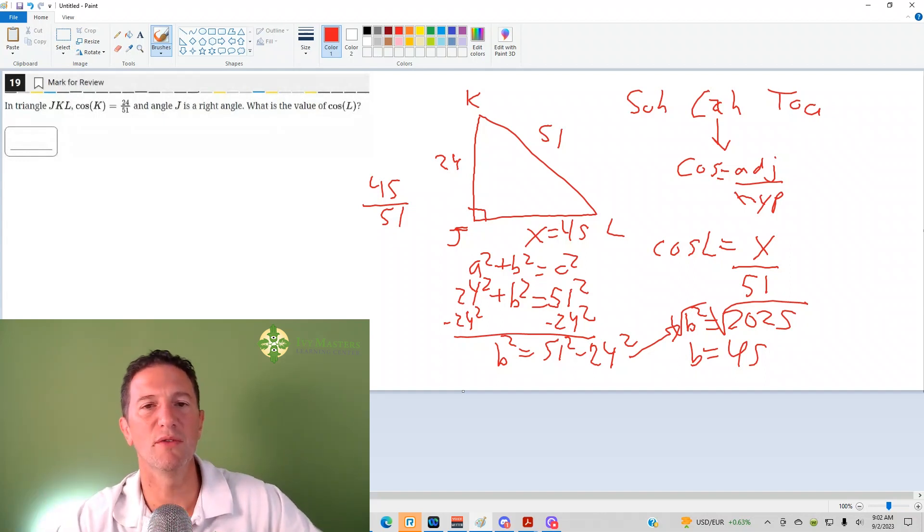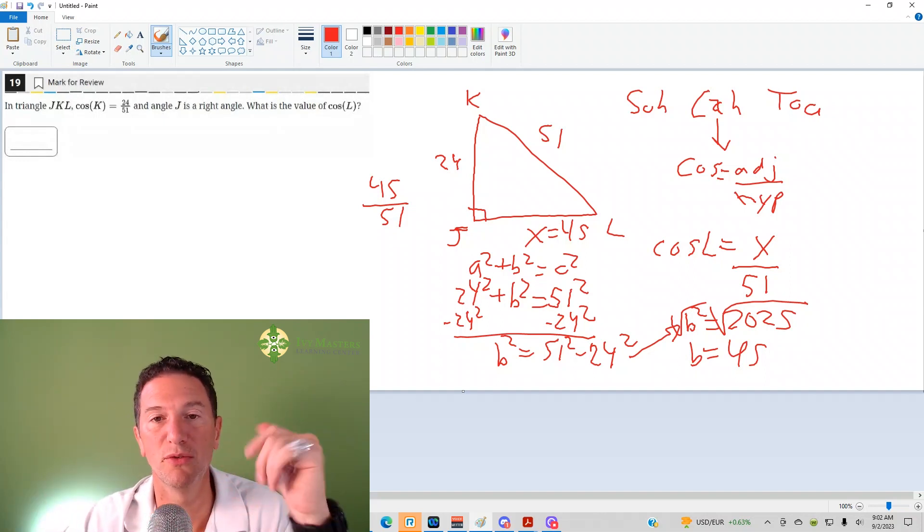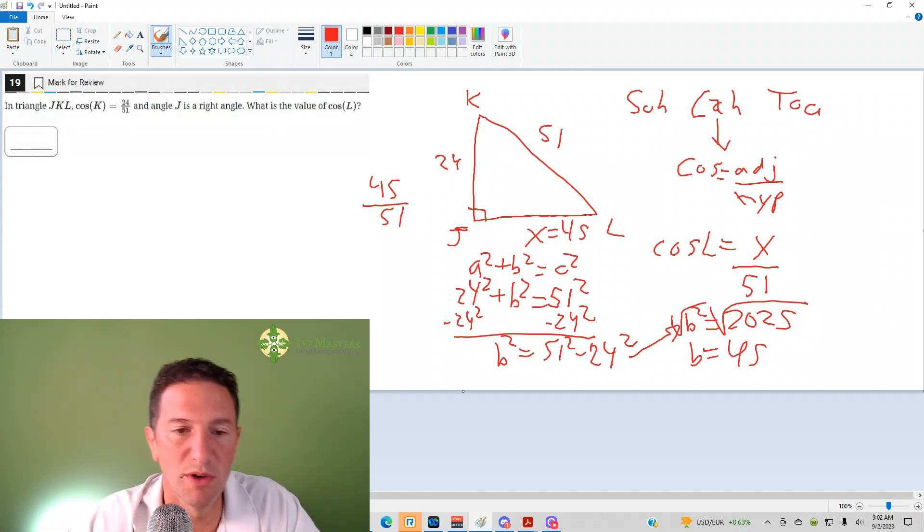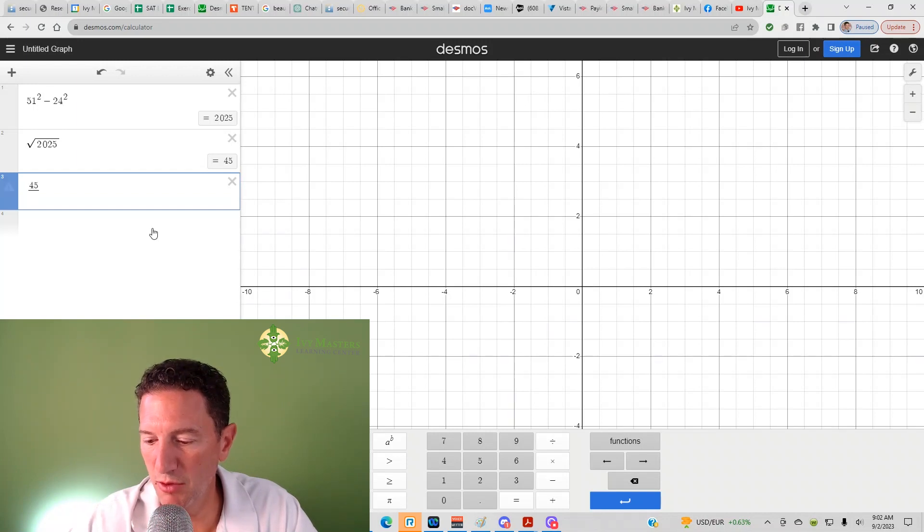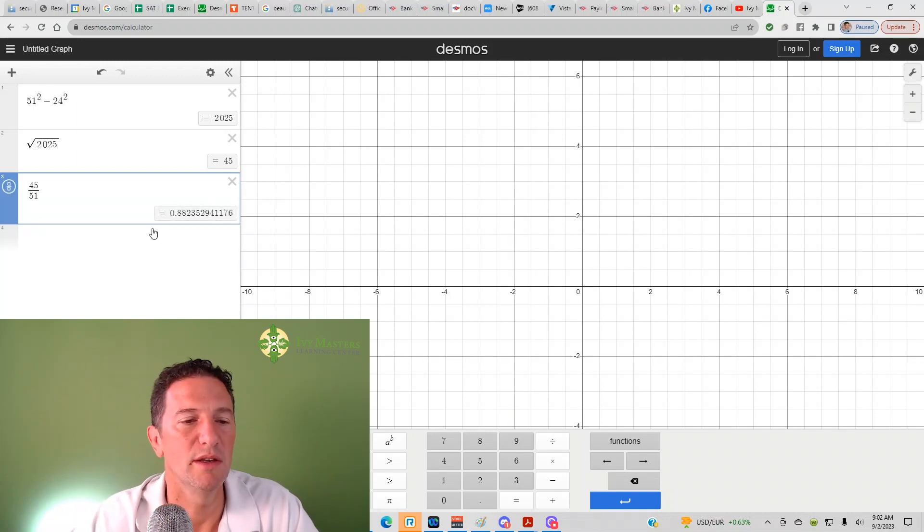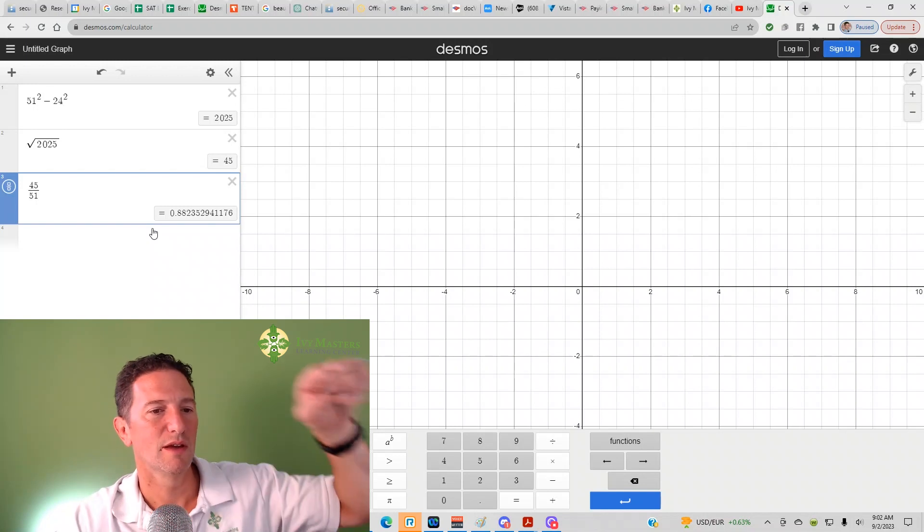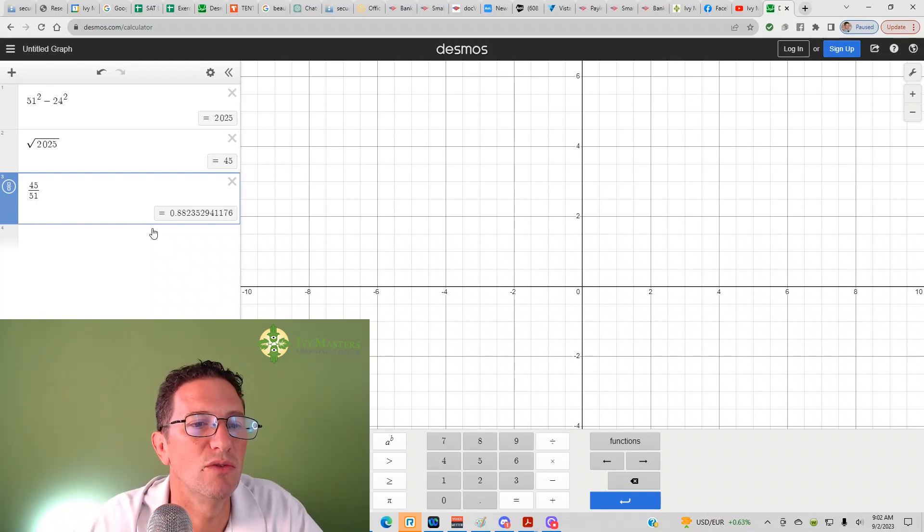Now on this SAT, you have five spots to bubble. Four spots was paper and pencil one. So you could literally just bubble in 45 over 51 and you're done. That's what I would recommend you do. If you really want to put the decimal in, you could throw it into Desmos, but completely unnecessary. 45 divided by 51 and you could bubble in 0.8823 and then you're done.